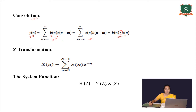Any linear time invariant system can be represented through two parameters. The first parameter, in the time domain, is h(n) — the impulse response. The other is known as the system function, which is the z-transform of the impulse response, H(z), in the frequency domain. These two parameters characterize any system.